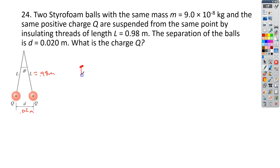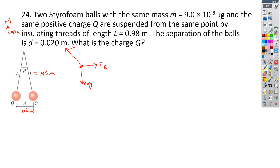For the free body diagram, I have charge Q on the right. Pointing straight down is mg. Pointing up to the left is tension T. And pointing to the right is the electric force. With plus y going up and plus x going right, T is not in the right direction — we need to split it into components: one component in the y direction and one component in the x direction.